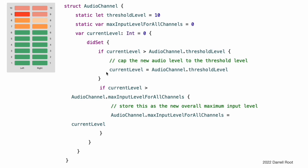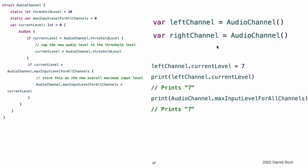Note: in the first of these two checks, the didSet observer sets currentLevel to a different value. This does not, however, cause the observer to be called again.